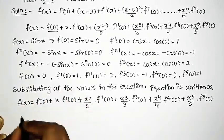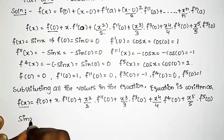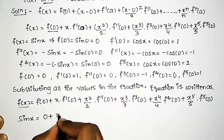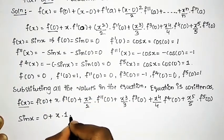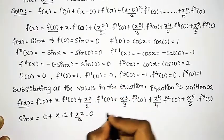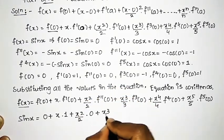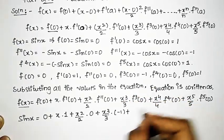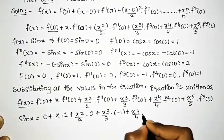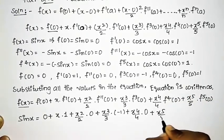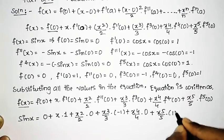Since f(x) = sin x, we substitute: sin x = 0 + x · 1 + x² / 2 · 0 + x³ / 3 · (minus 1) + x⁴ / 4 · 0 + x⁵ / 5 · 1.